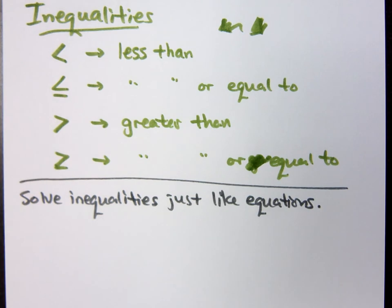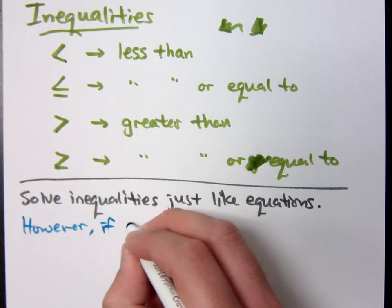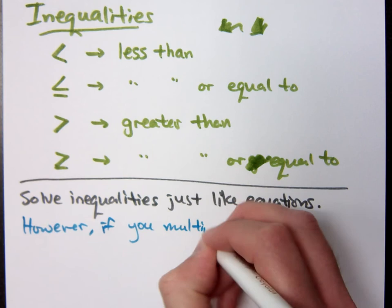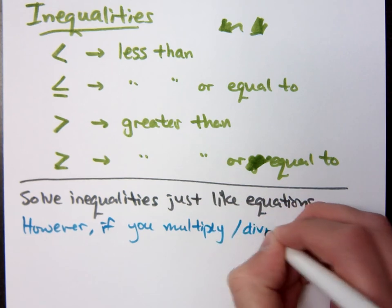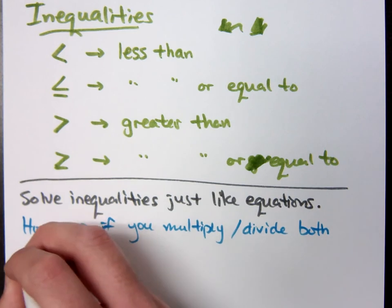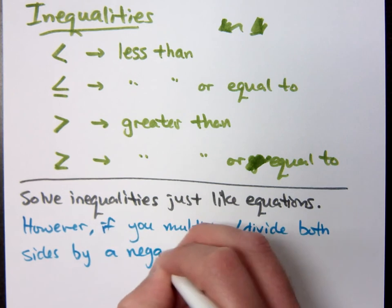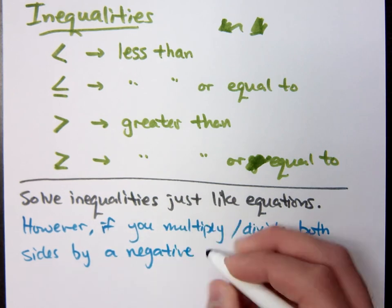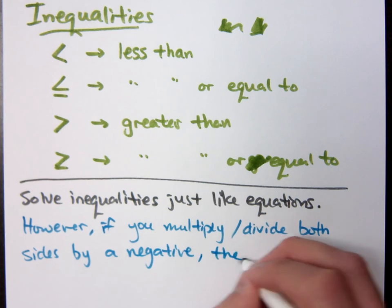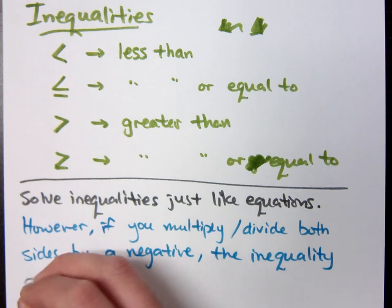There is a condition here though. Here's the condition. It says that if you multiply or divide, multiply or divide both sides by a negative.